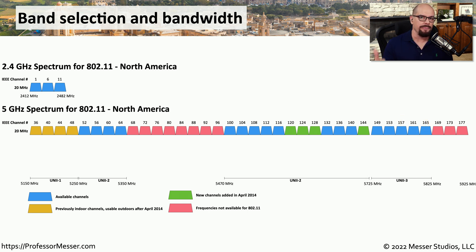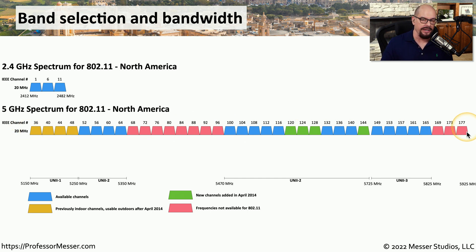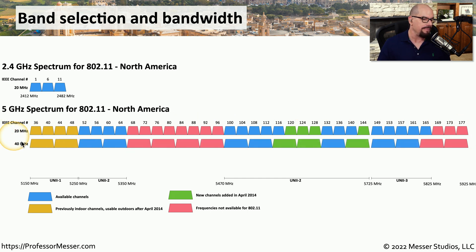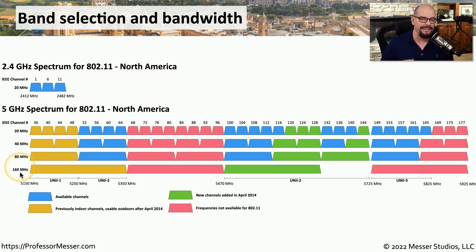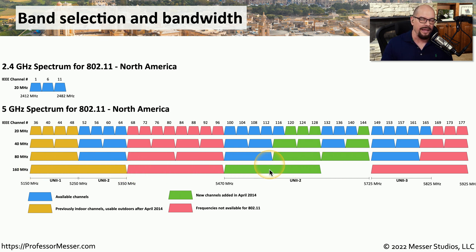You may be using larger bandwidths than 20 megahertz to communicate, because you can get much better throughput that way. So it may not be 20 megahertz channels you're choosing — it may be a 40 megahertz bandwidth, an 80 megahertz bandwidth, or the current largest, 160 megahertz bandwidth. At 160 megahertz, there are really two separate non-contiguous areas available to communicate at such a large bandwidth.